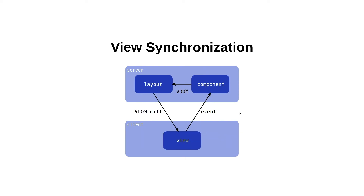IDOM, on the other hand, goes the route of synchronizing a representation of the view, called VDOM. As a result, it gives Python developers control over how the underlying model of their application is being converted into the view. The specific implementation shows how composable components get put together to create this representation of the view. What the layout does is it looks at the last time the view was rendered, checks for the differences from this time, and only sends the differences over to the client.